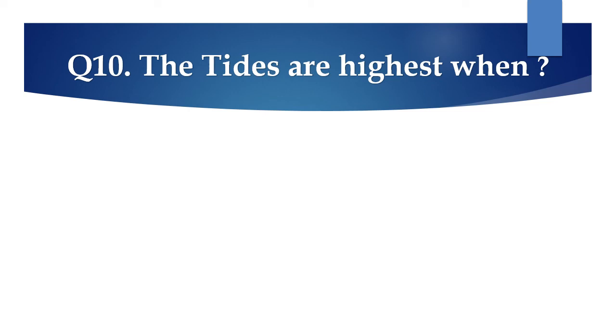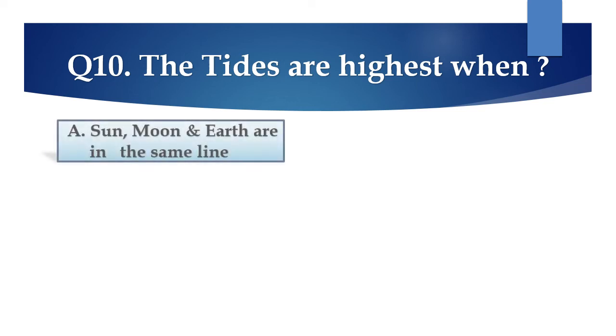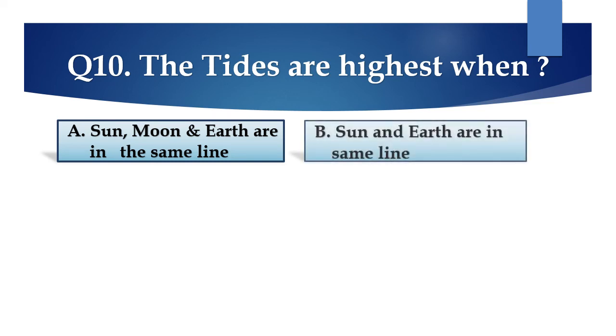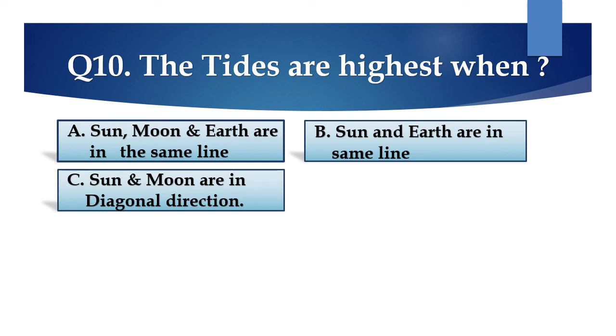Question 10: The tides are highest when? The options are: A. Sun, moon and the earth are in the same line, B. Sun and the earth are in the same line, C. Sun and moon are in diagonal directions, or D. None of the above.